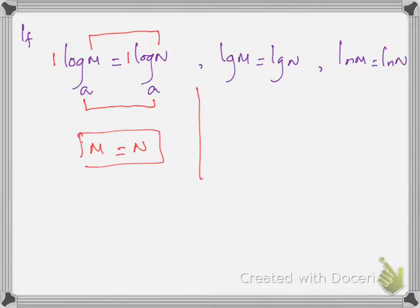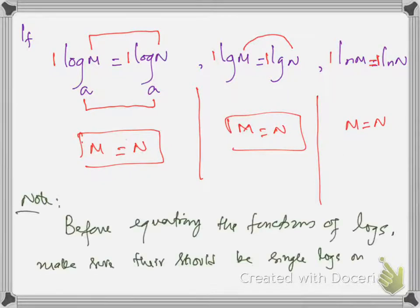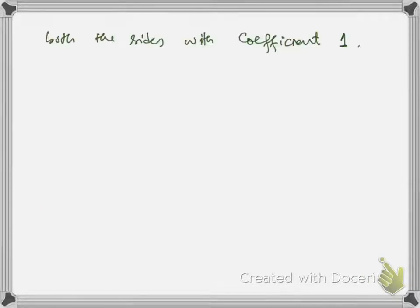In this case, lg has base 10, so the bases are already the same. Since the coefficients of the logs are 1, we can equate m to n. In ln, the bases are also the same, so we can equate m to n, and the coefficients are already 1. These are the logarithmic equation forms for all types of logs. An important note: before equating the functions of logs, make sure there is a single log on both sides with coefficients 1.